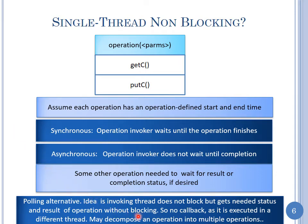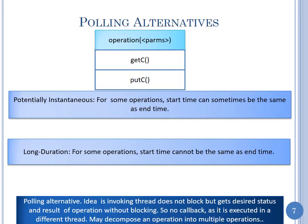To help transform blocking operations into non-blocking ones, I'm going to distinguish between two kinds of operations: potentially instantaneous operations — where the start time can sometimes be the same as the end time — and long-duration operations, where the start time cannot be the same as the end time. Let's figure out how the operations we're focusing on map to these two categories, and then what to do with them in terms of polling.